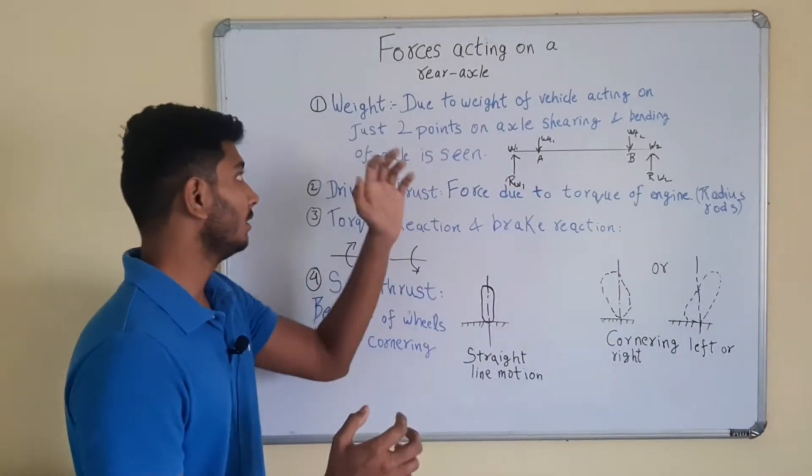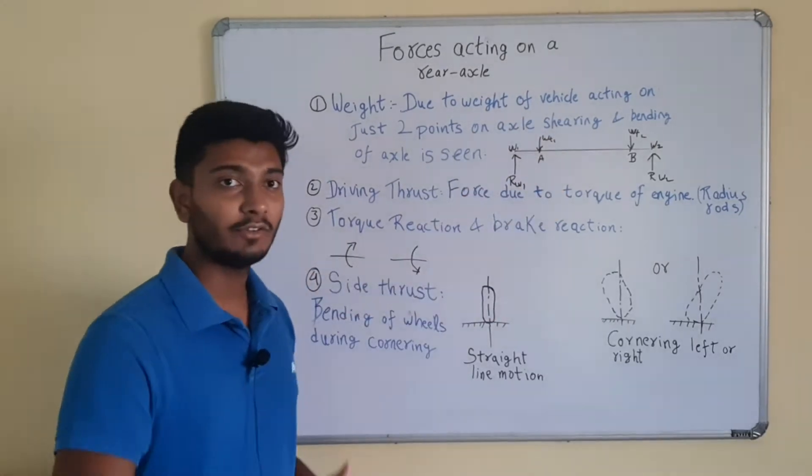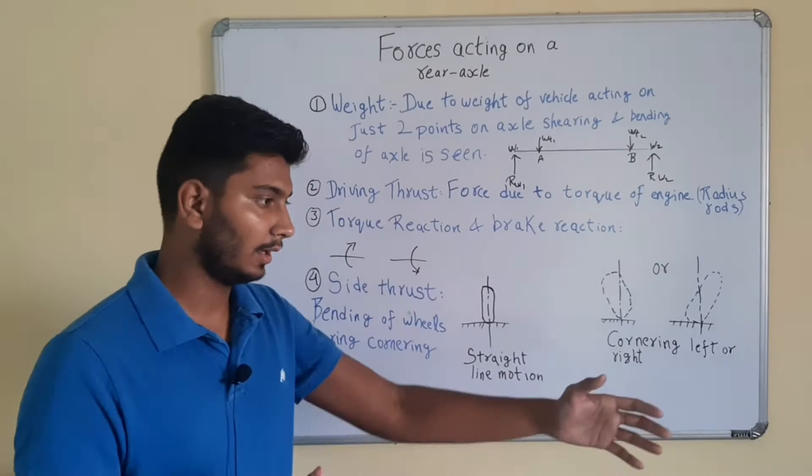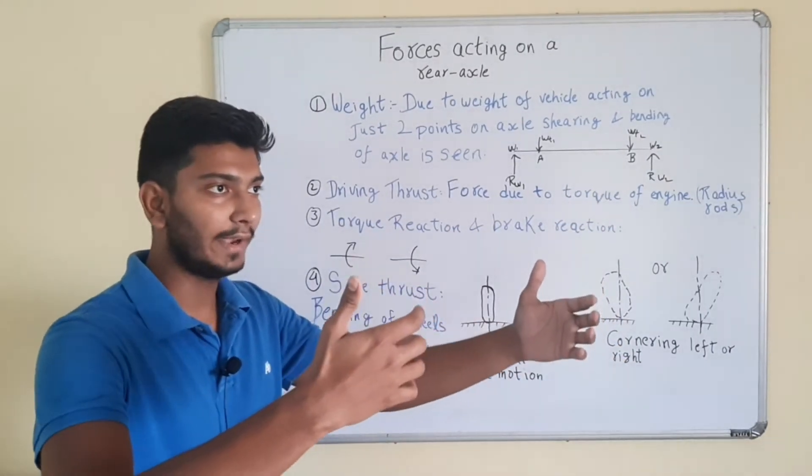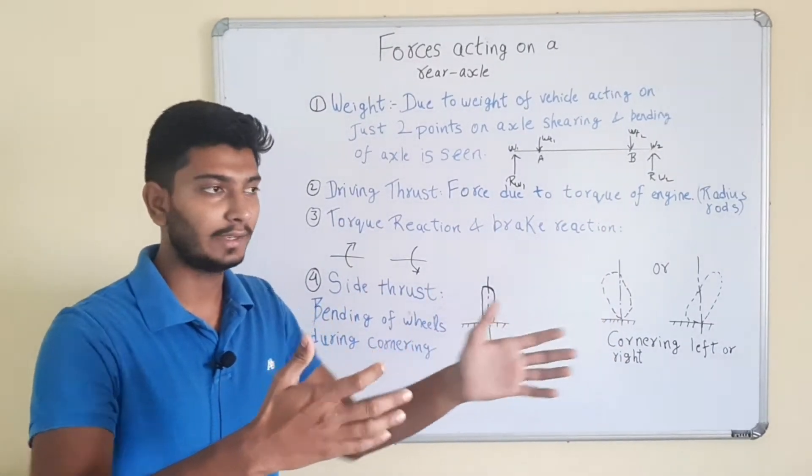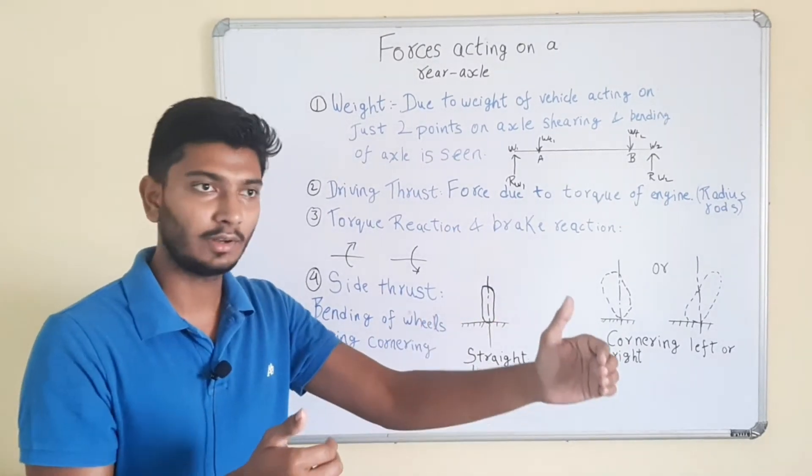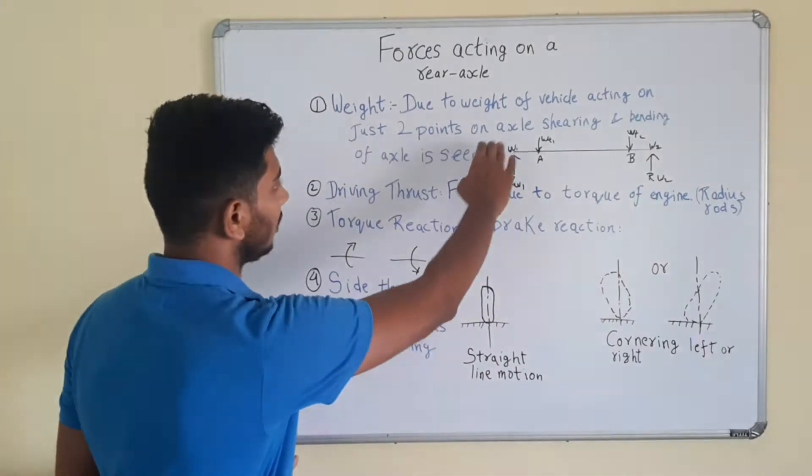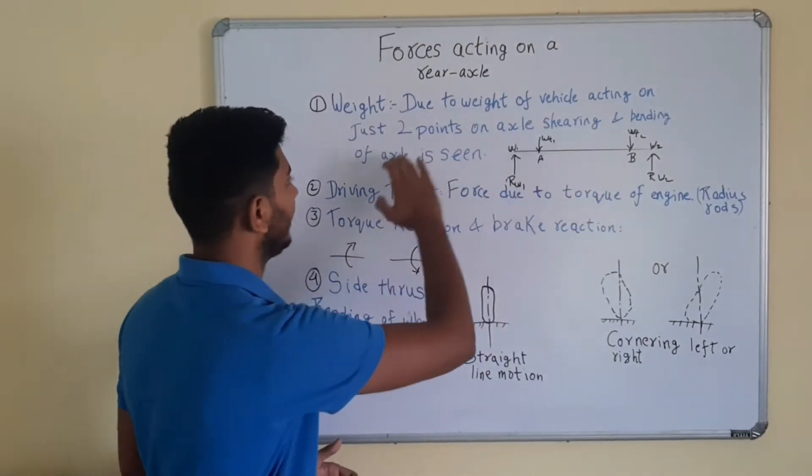Due to the weight of vehicle acting on just two points of the axle. The axle is a whole rod. So the weight of the vehicle is acting on only two points on front axle as well as rear axle. This causes shearing and bending of axle.